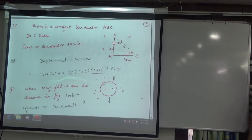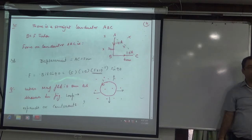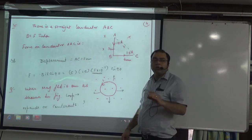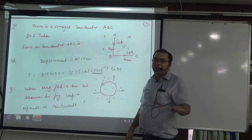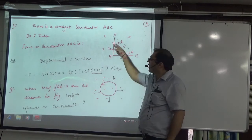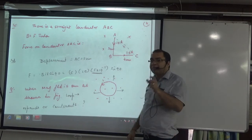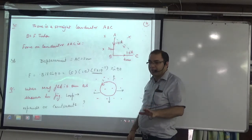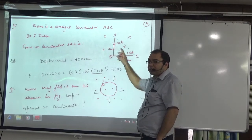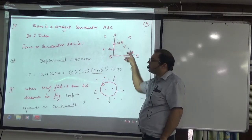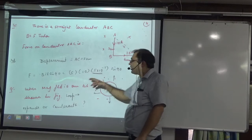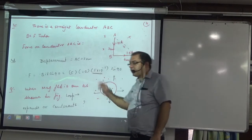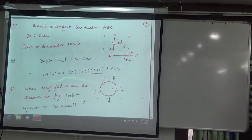Next question. A straight conductor A, B, C — current starts at A and enters at C. You have to find the net force on A, B, C. Two ways: take the force on each segment and use the parallelogram law and vector addition. Or take the displacement — AC is 5 cm (with AB = 3 cm, BC = 4 cm). The force equals B, I, L, sin 90°, putting length as 5 cm. So the net force can be calculated.